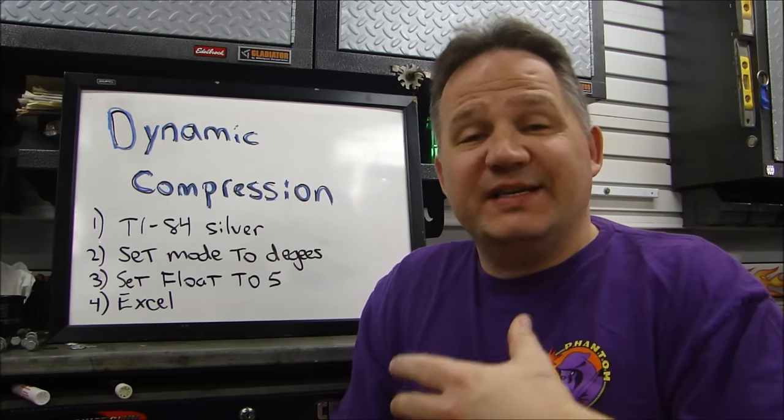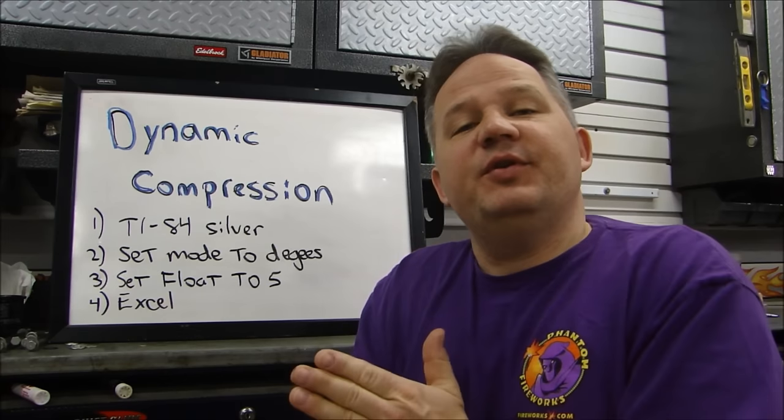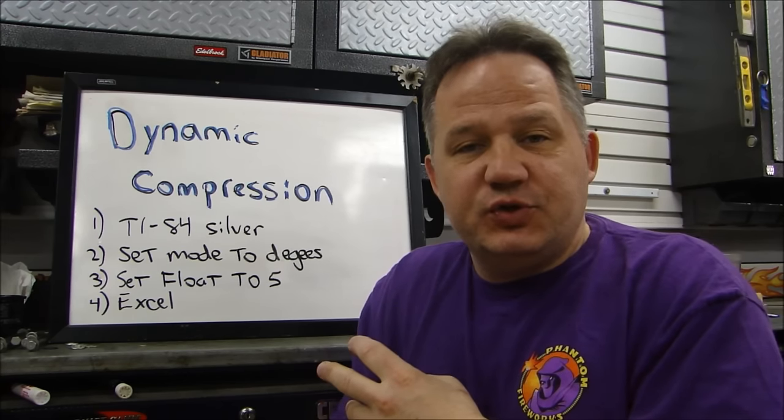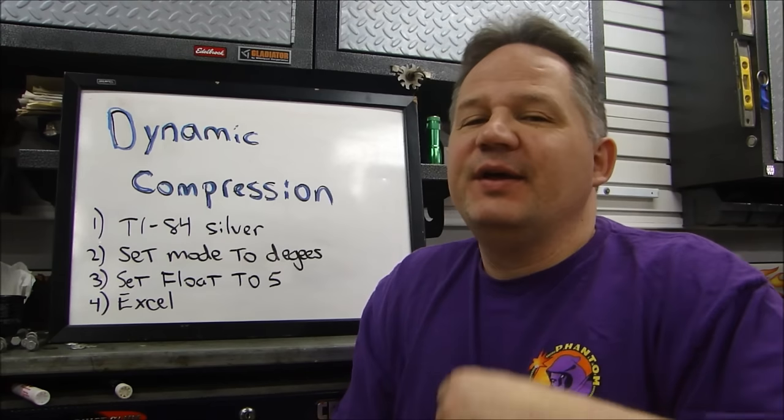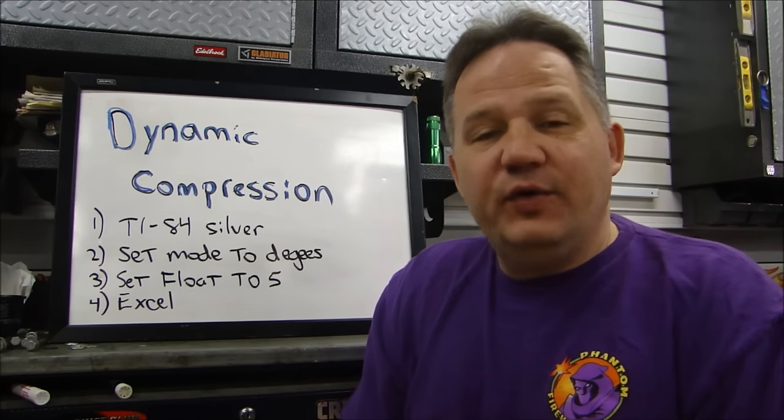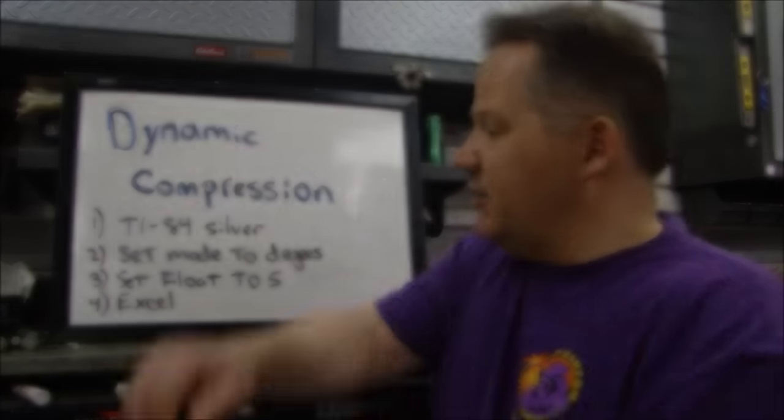And finally, if you're going to set up a spreadsheet, and you're going to use Excel to do these calculations for you, you have to do a conversion because the default mode in Excel is radians. And you'll have to take your numbers, convert them to degrees in order for these calculations to work. Okay? So let's go through the math one more time, and it'll all make sense, and hopefully it'll be clearer, and you guys will be able to calculate it yourself.